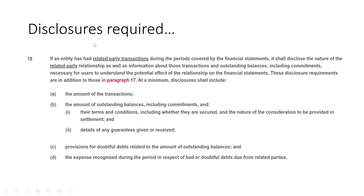Related party disclosures appear as notes in the financial statements. It's worth picking up an IFRS set of accounts and looking at the related party section to see what's disclosed — real-life examples can help with exams. Also, don't jump straight to fraud if you spot an undisclosed related party. Look at what the exam question is telling you and only mention fraud risk if the question is pointing that way. You may also link it to the ethics part of the question.